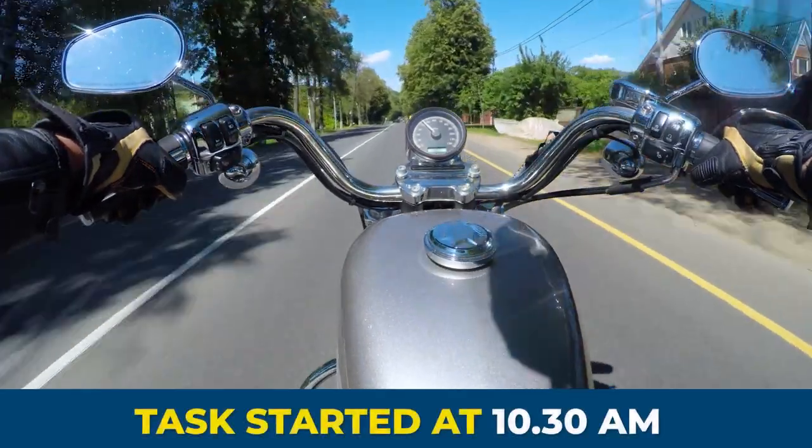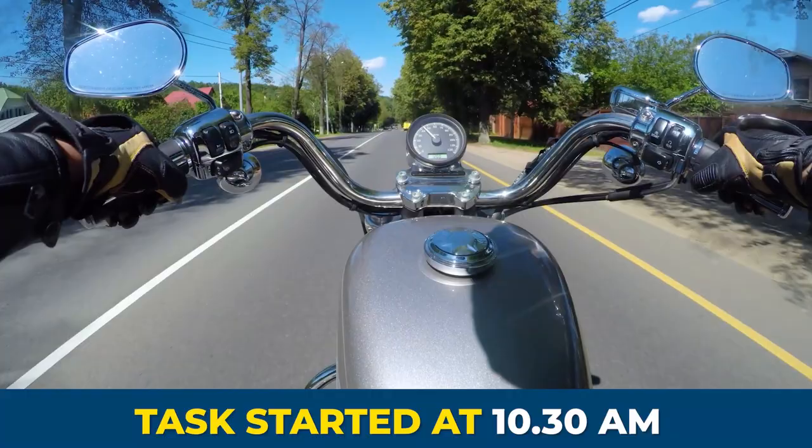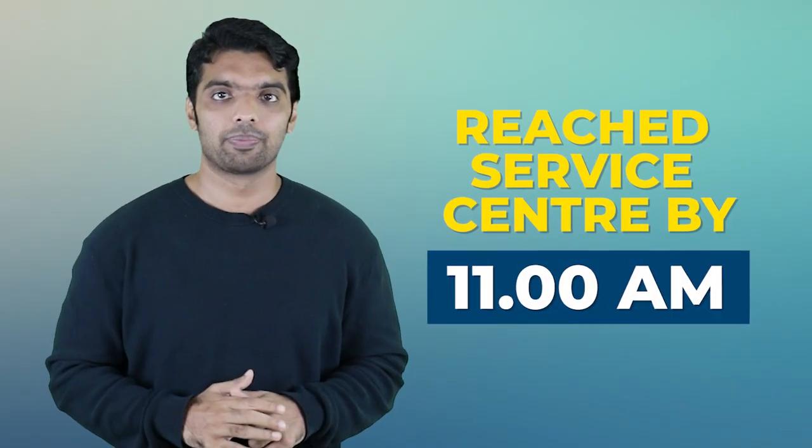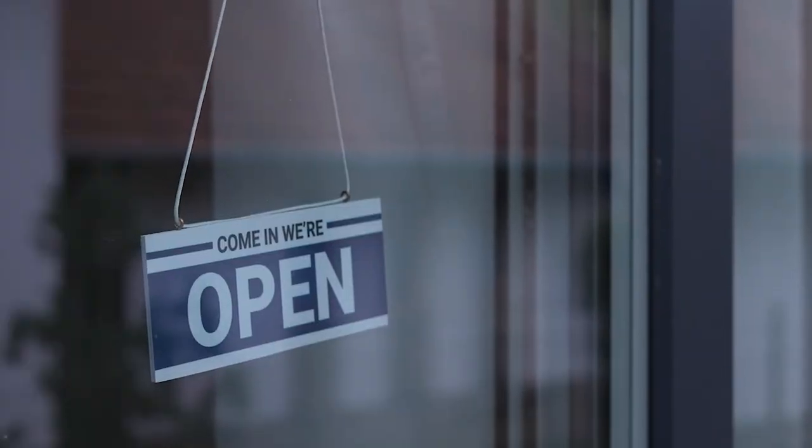I started my work on this activity by 10:30 a.m. This means by 10:30 a.m. I took my motorcycle from my home and I was heading towards the service station. By 11 a.m. I reached the service station. I reached the door of the service station. After that, I realized I have time until 4 p.m. to deliver my bike to the service station.